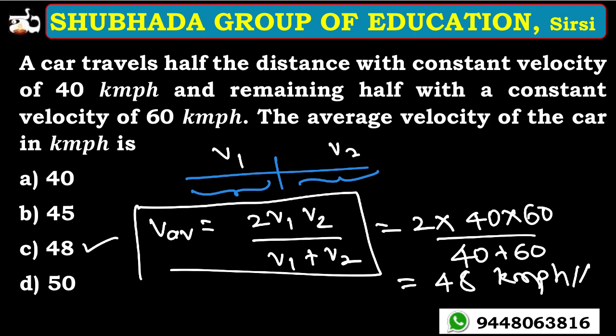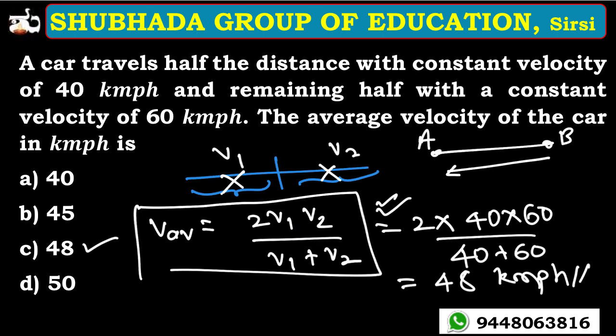This is the short trick you can use when the distance is the same for both halves — you can use this formula directly to find the average velocity. If there is a change in distance, there is a different method. That clears the entire concept for you.